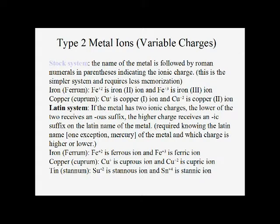For most of the transition metals and a couple of other metals, they form more than one ionic charge on a regular basis. To identify what charge is present when we're naming them, we have to give separate names for the separate charges. There are two systems we use: the original Latin system and the more modern stock system. The stock system is easier to use and more universal — it works for more elements than the Latin system does.